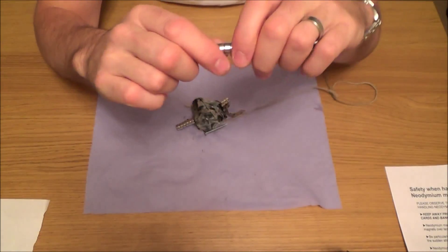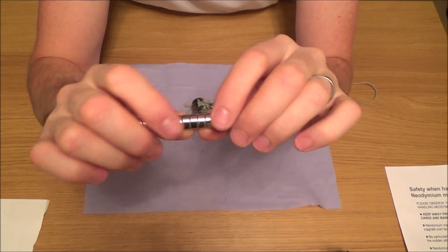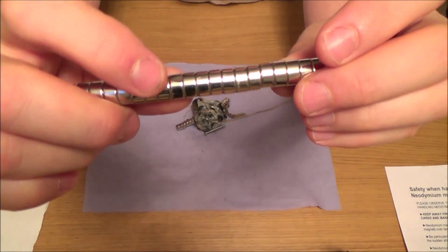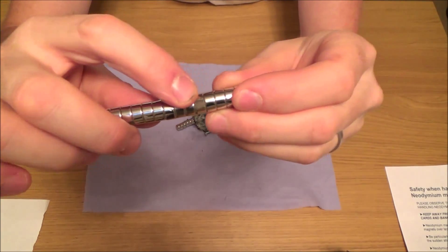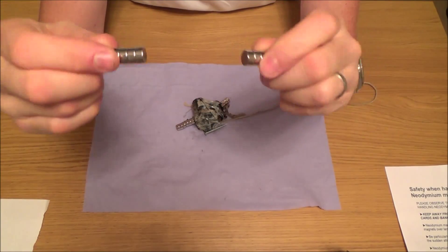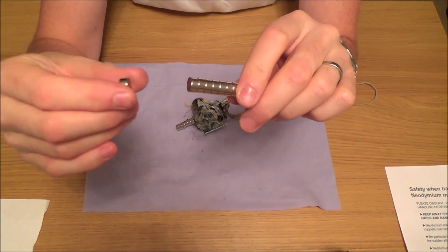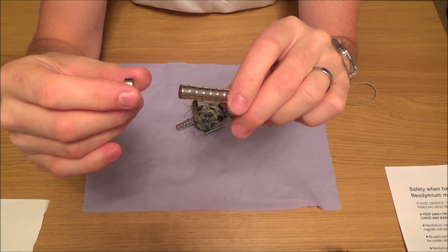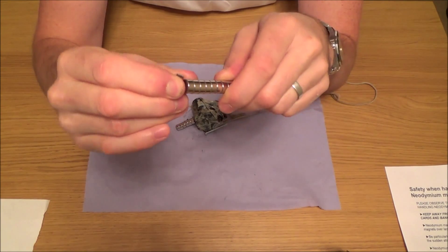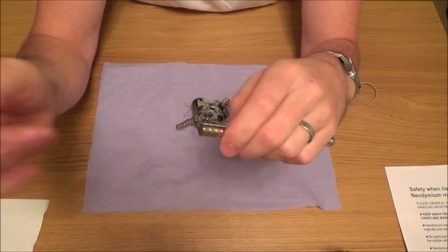The problem with them is they are actually brittle, so you can see there's a few chips on here. If you were to let them go from a distance, because these really do fly towards each other, they go a long way even from hard to pull off, flying towards each other.